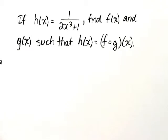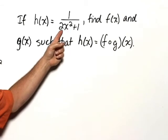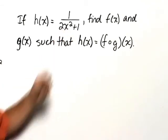In terms of f of x and g of x, we need to make g of x the first things that we do to the x value. And that is we square it, multiply it by 2, and then add 1 to it.